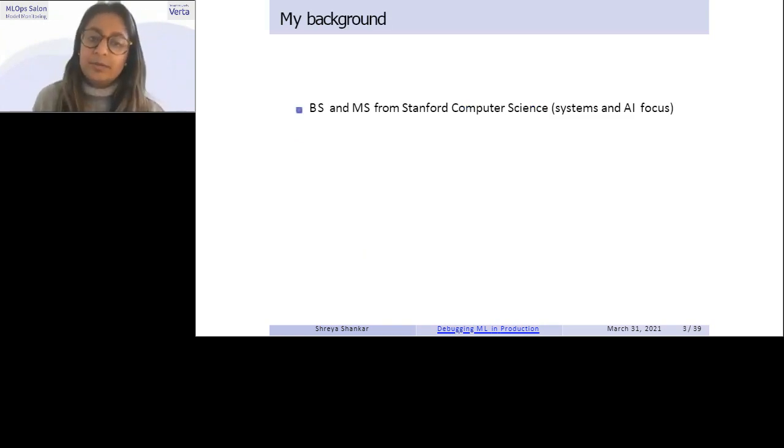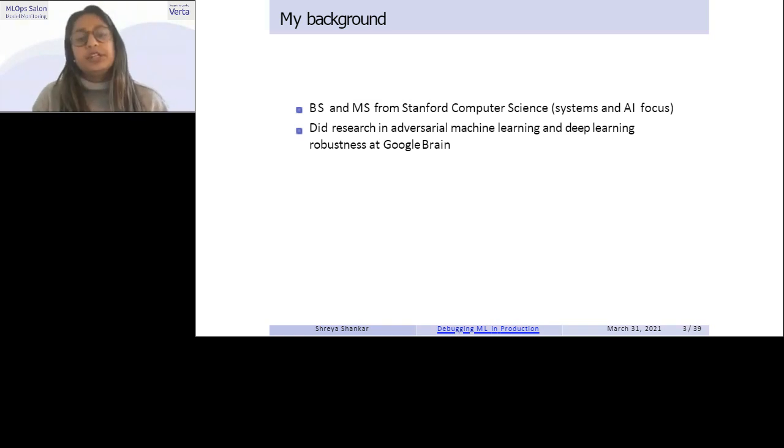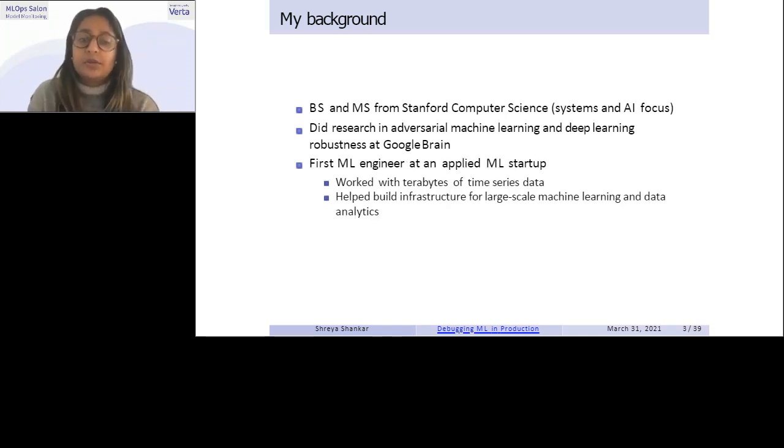To start off, a little bit about my background. I got my undergrad and my master's from Stanford. I concentrated in systems and machine learning, respectively. And while I was in my undergrad, I did ML research specifically in adversarial examples and deep learning robustness at both Google Brain and Stanford. And then after I graduated, I joined an applied ML startup as a first ML engineer.